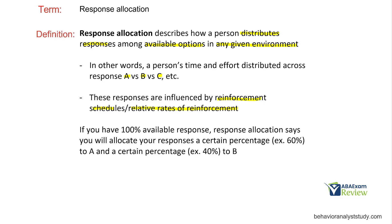Those responses are influenced by reinforcement schedules and relative rates of reinforcement. If you have 100% of your responses available, you will allocate a certain percentage to A and a certain percentage to B. There's only so much time in the day, only so much time to engage in responses. How will those responses be distributed based on the reinforcement they acquire?